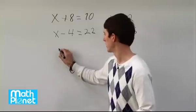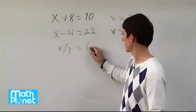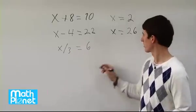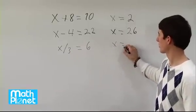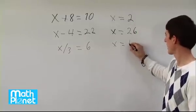Now what if we have a division? x divided by 3 equals 6. The inverse operation to division is multiplication. So here we have x equals 6 times 3. So 6 times 3 is 18.